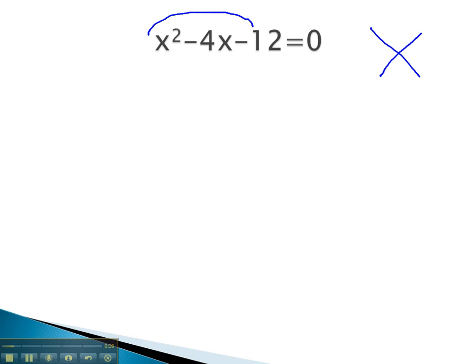Using the AC method, we want to multiply the negative 12 and add the negative 4. A little bit of work tells us that it's 6 and 2 if the 6 is negative. Because we have a 1 in front of x squared, we can use those numbers in our factors. x minus 6 times x plus 2 equals zero.